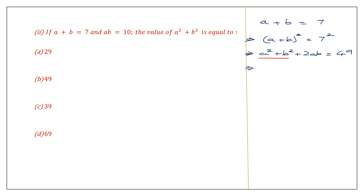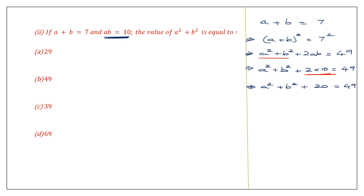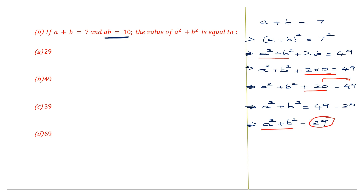We need to find a squared plus b squared, so we leave that on the left hand side. Here 2ab means 2 into ab, and ab is given as 10, so 2 into 10 is 20. So a squared plus b squared plus 20 equals 49. Transposing plus 20 to the other side gives a squared plus b squared equals 49 minus 20, which is 29. That is option A.